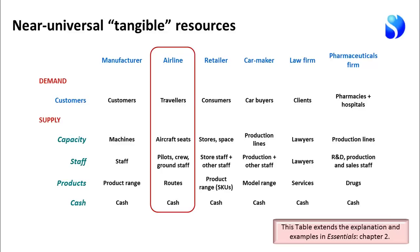I've listed what those universal resources are in different contexts: a manufacturing company, retailer, car maker, law firm, or pharmaceuticals company. Every one of those has customers, capacity, staff, a product range, and cash. However, some kinds of business need variations on this standard list.